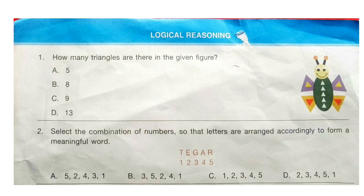But the outer wing is not a triangle. Question 2: Select the combination of numbers so that letters are arranged accordingly to form a meaningful word. Look at the options and select the answer. The correct answer is option B: 3, 5, 2, 4, 1 — and that makes the word GREAT.